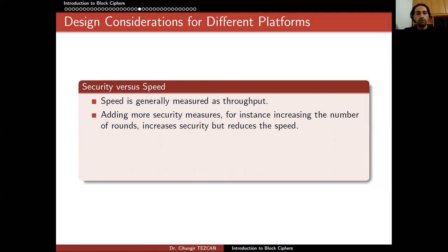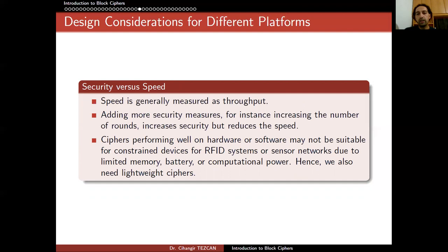Security versus speed is another design consideration. Speed is generally measured as throughput. Adding more security measures — for instance, increasing the number of rounds — increases security but reduces speed. Ciphers performing well on hardware or software may not be suitable for constrained devices like RFID systems or sensor networks due to limited memory, battery, or computational power. Hence, we also need lightweight ciphers for these kinds of platforms.